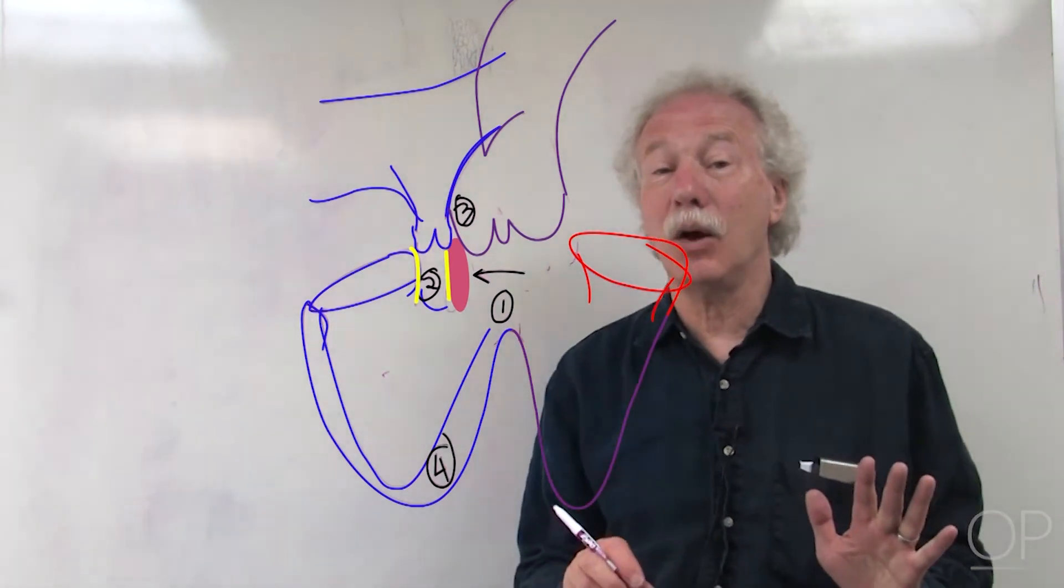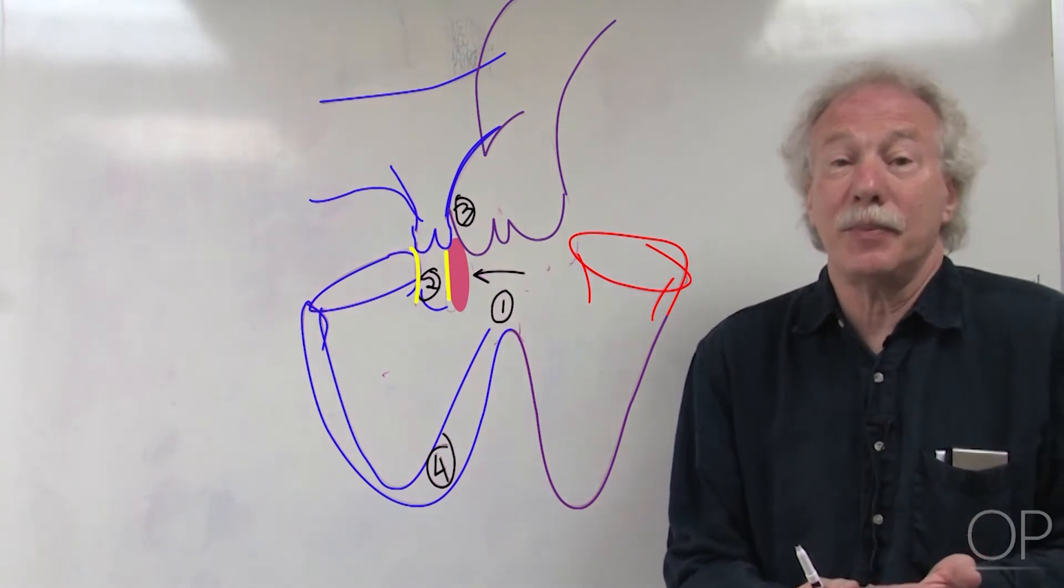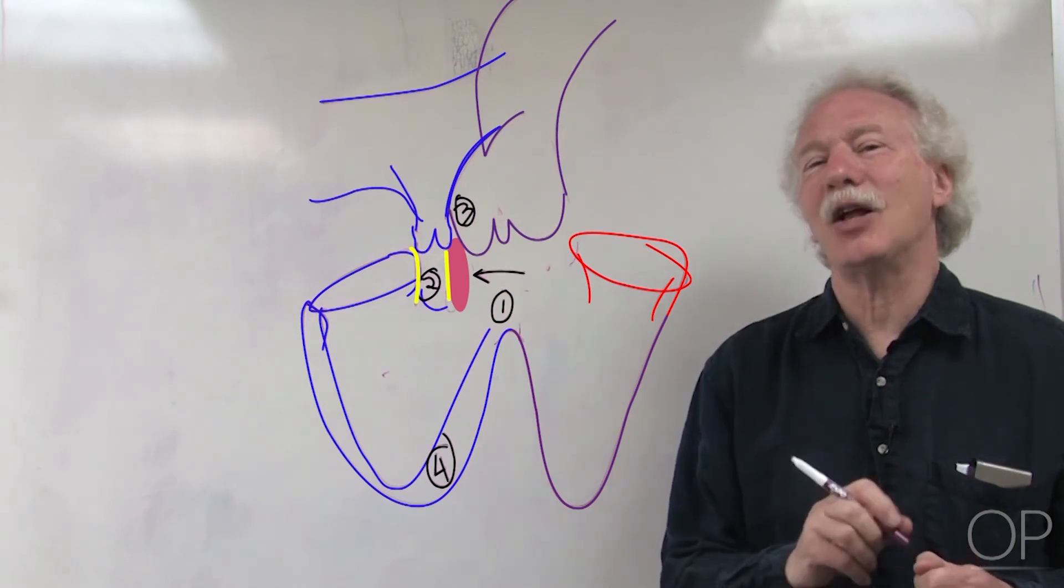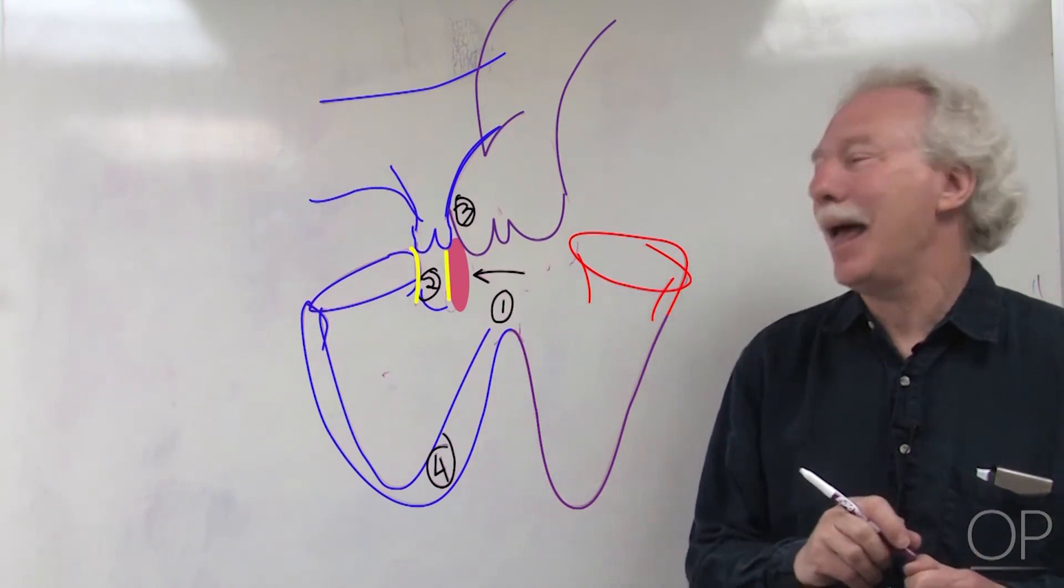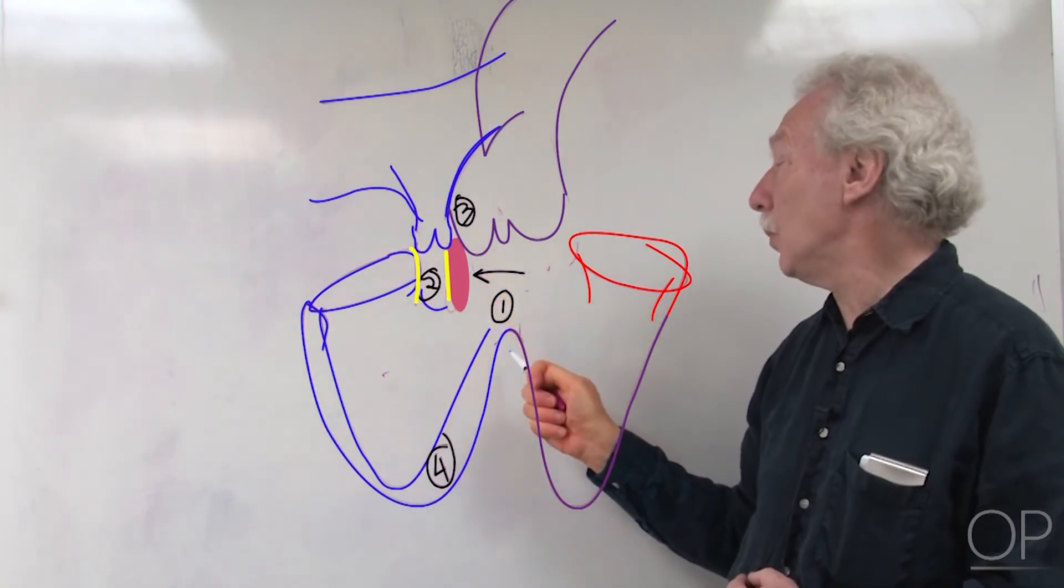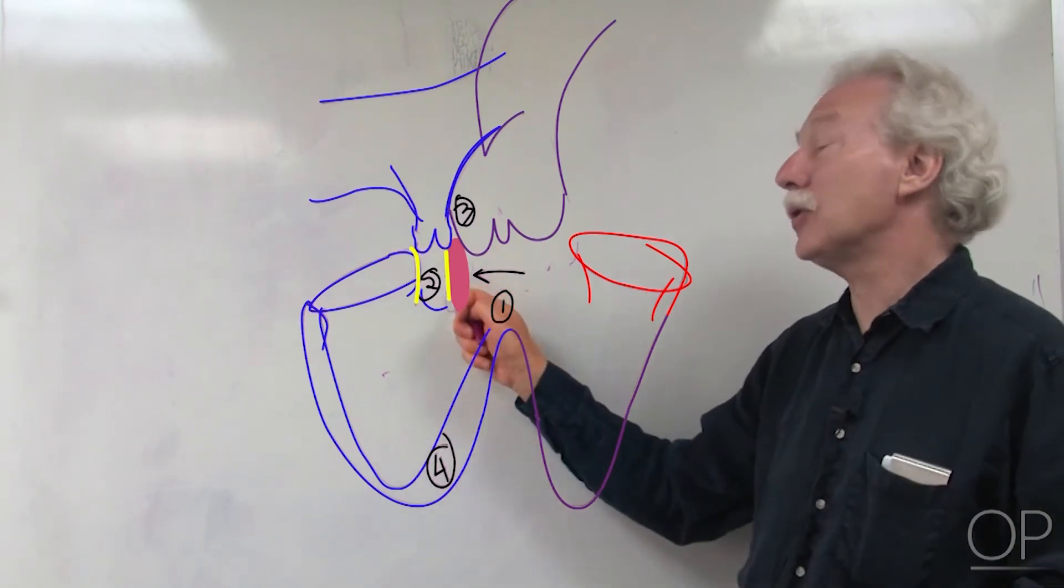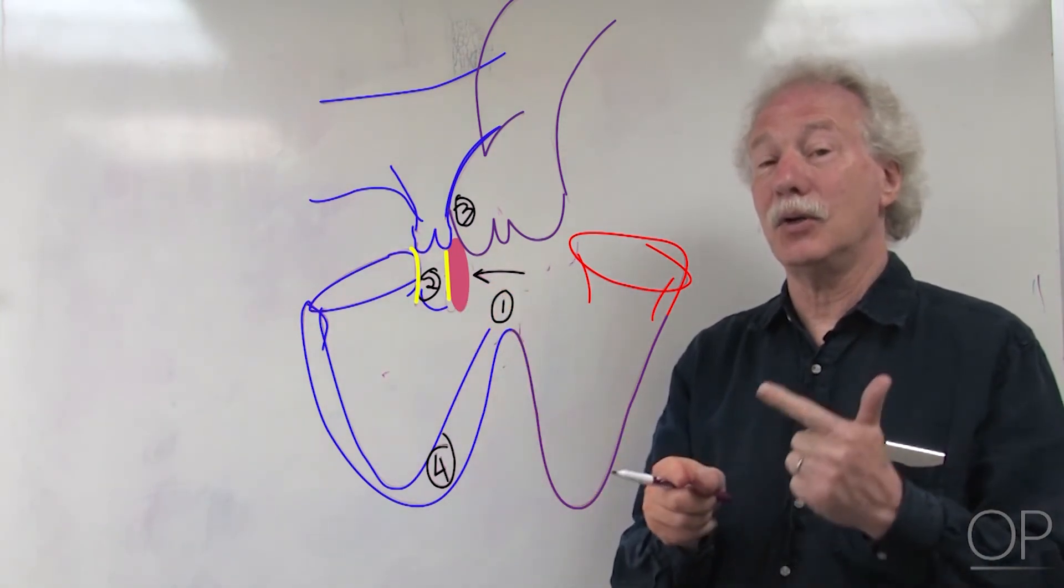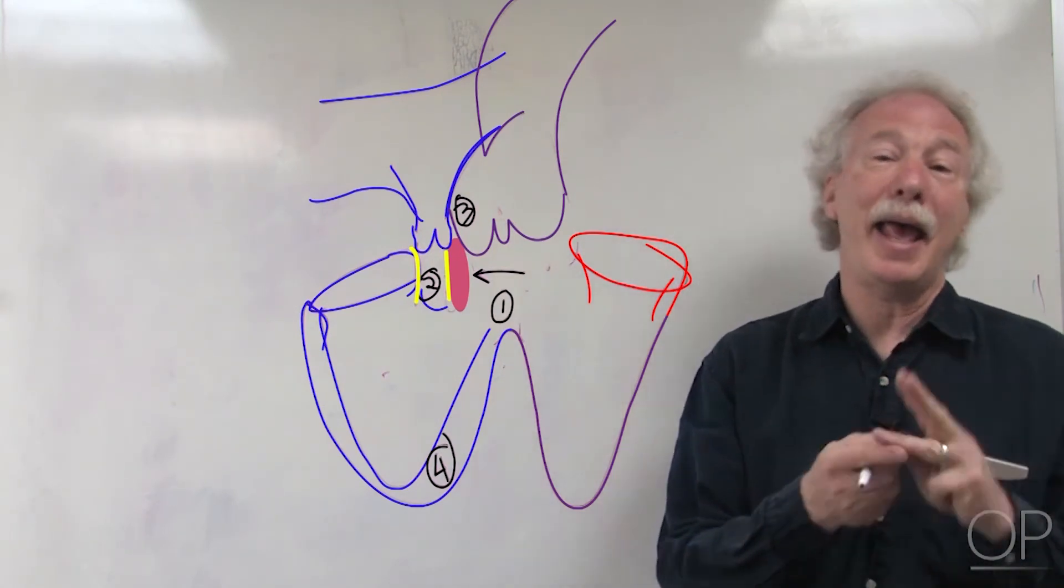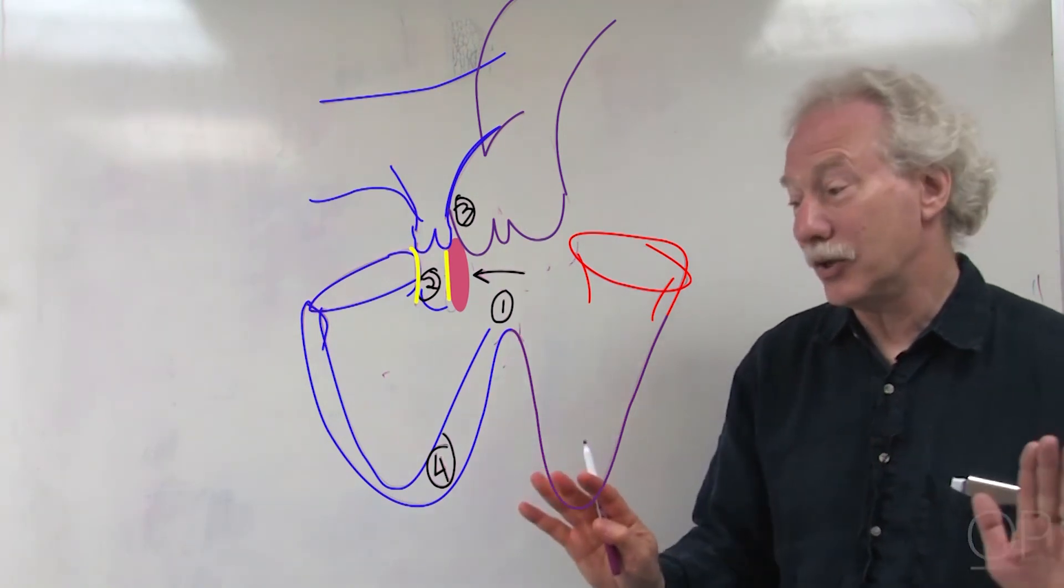Tetralogy of Fallot has the four components which Fallot talked about, but there really is one primary etiologic anatomic problem: the malalignment of the conal septum with the rest of the ventricular septum, because it's anterior, superior, and to the right. You get your VSD, your sub-pulmonary stenosis, your overriding aorta, and the right ventricular hypertrophy follows suit. That's Tetralogy of Fallot.